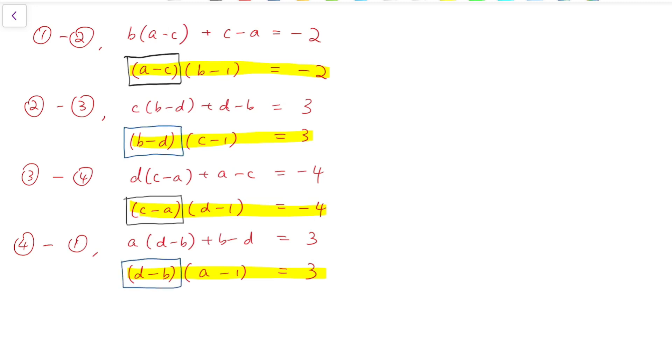While the terms from the other two equations, b minus d and d minus b, also can be regarded as the same term, because one is just the other multiplied by minus 1.